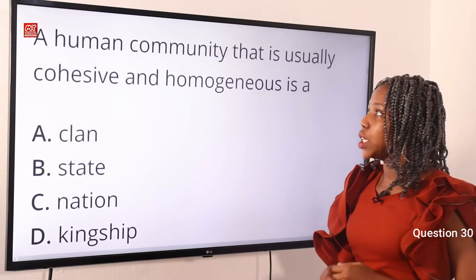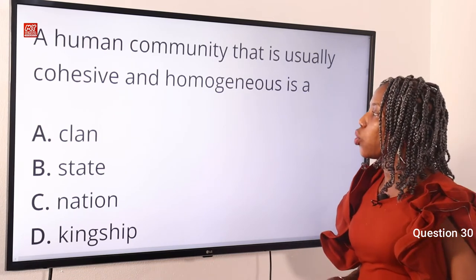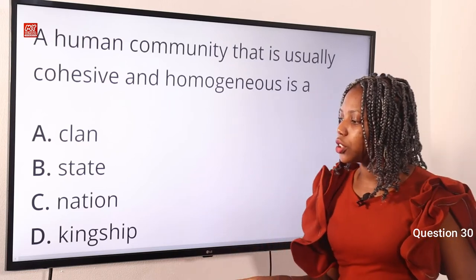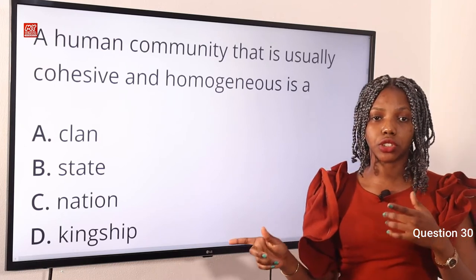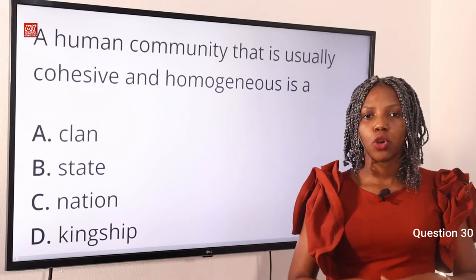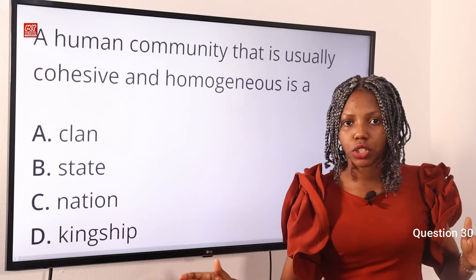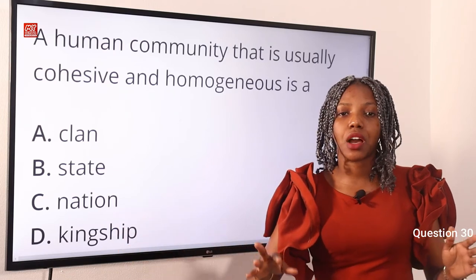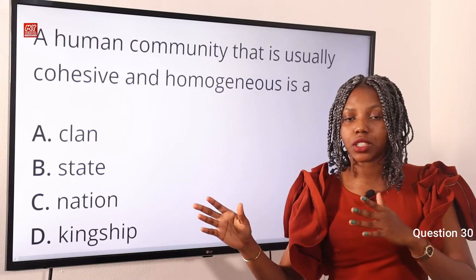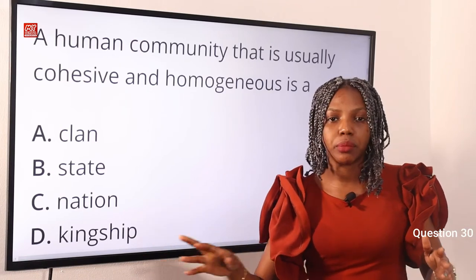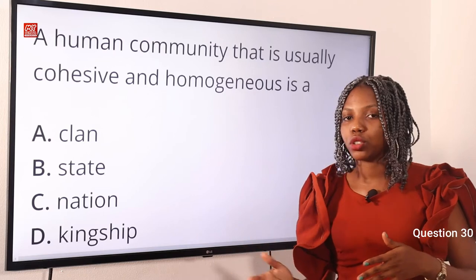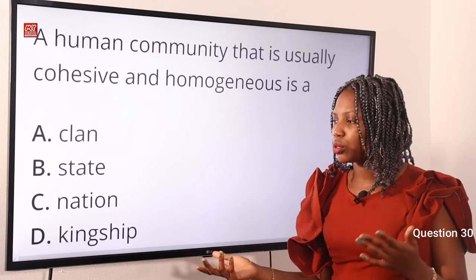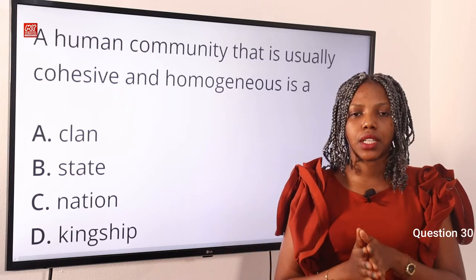Question 30. A human community that is usually cohesive and homogeneous is: Option A, a clan. Option B, a state. Option C, a nation. Option D, kinship. The answer is nation — Option C. We can see the word homogeneous, and we know that homogeneous is attached to nation, as opposed to a state where we have heterogeneous. Heterogeneous means different in cultural background, but nation means the same consciousness, goals, or cultural background.